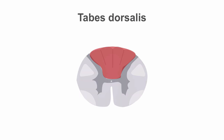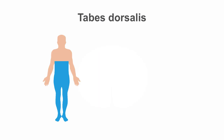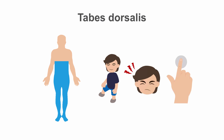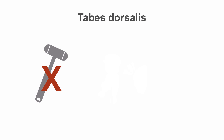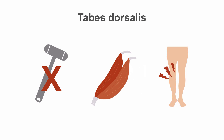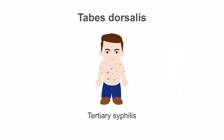In tabes dorsalis, damage occurs in the large posterior root fibers destined for the posterior columns. The damage is often symmetrical and affects most often the legs, presenting as loss of proprioception and vibration sensation. Reflexes are lost, and hypotonia is seen due to loss of these fibers. The syndrome is characterized by lightning-like pain in the legs. Tabes dorsalis is most commonly caused by tertiary syphilis.